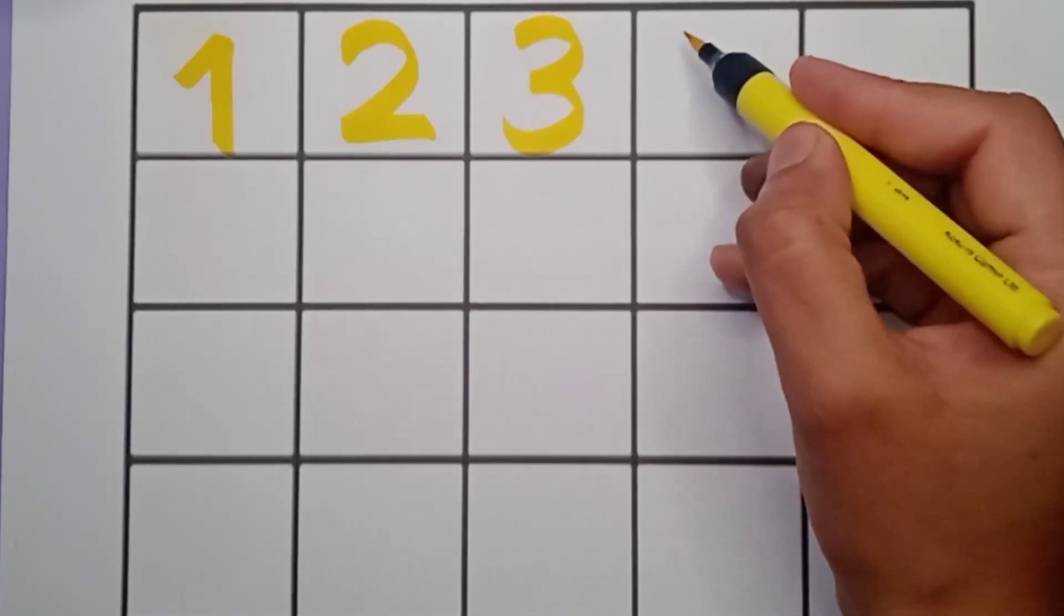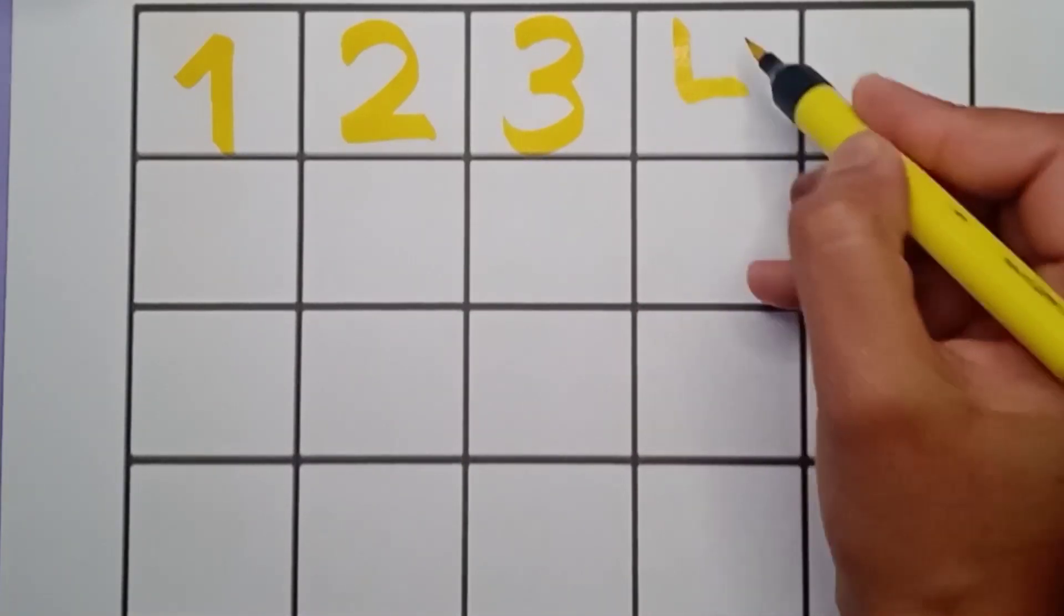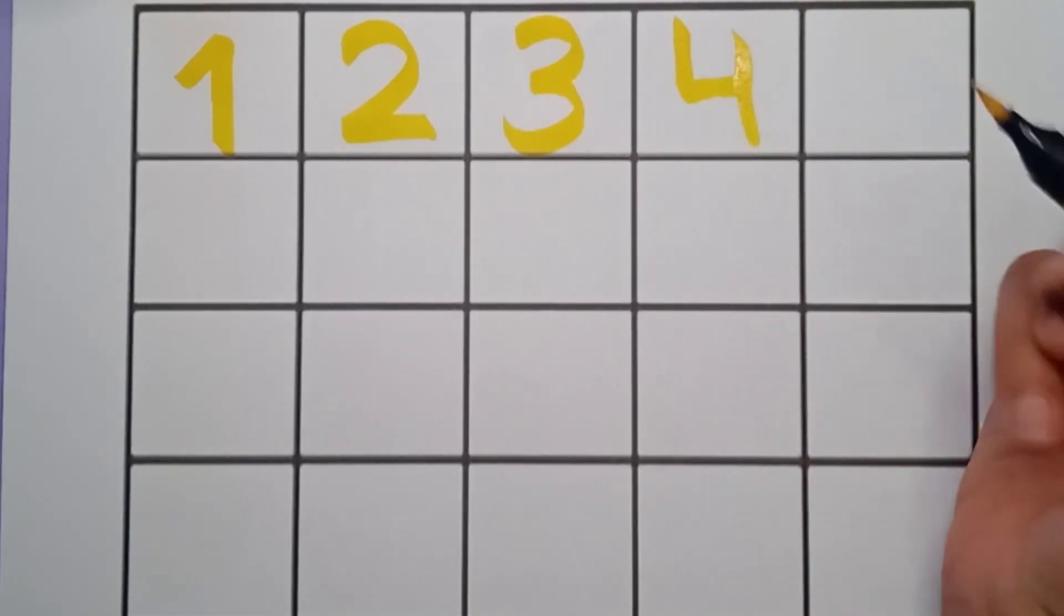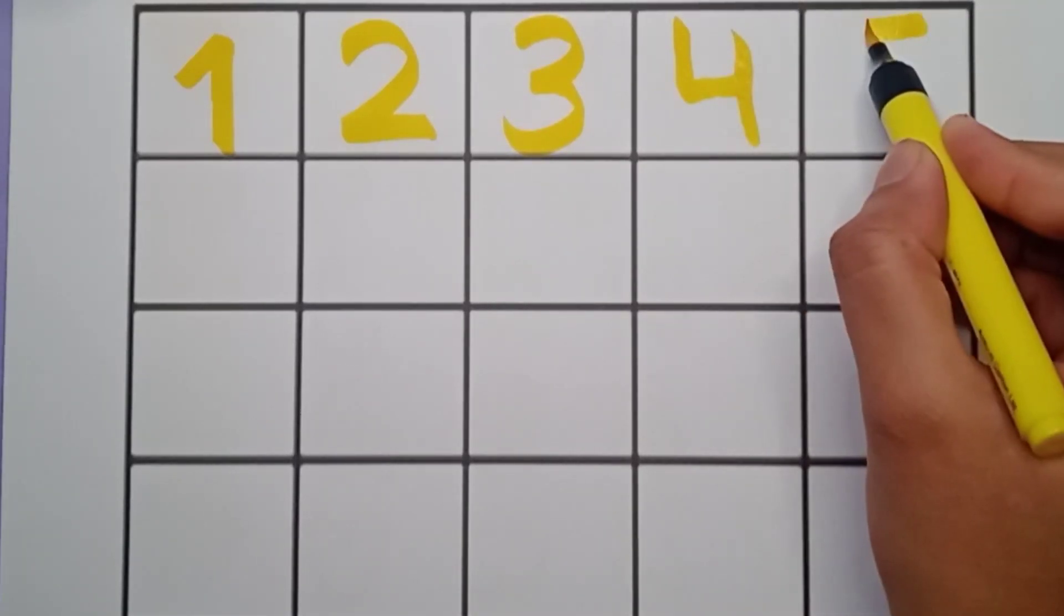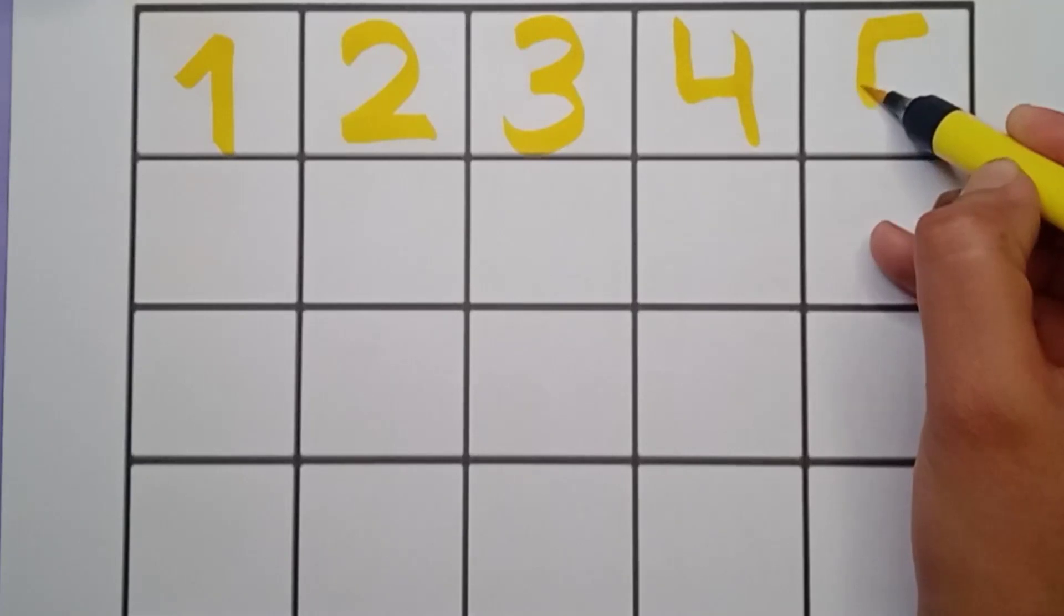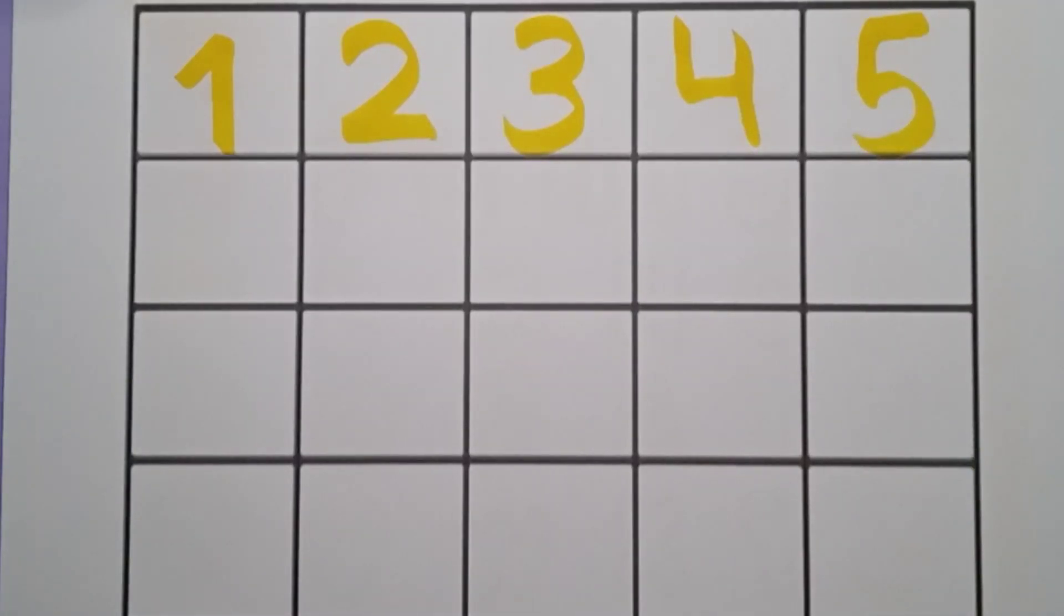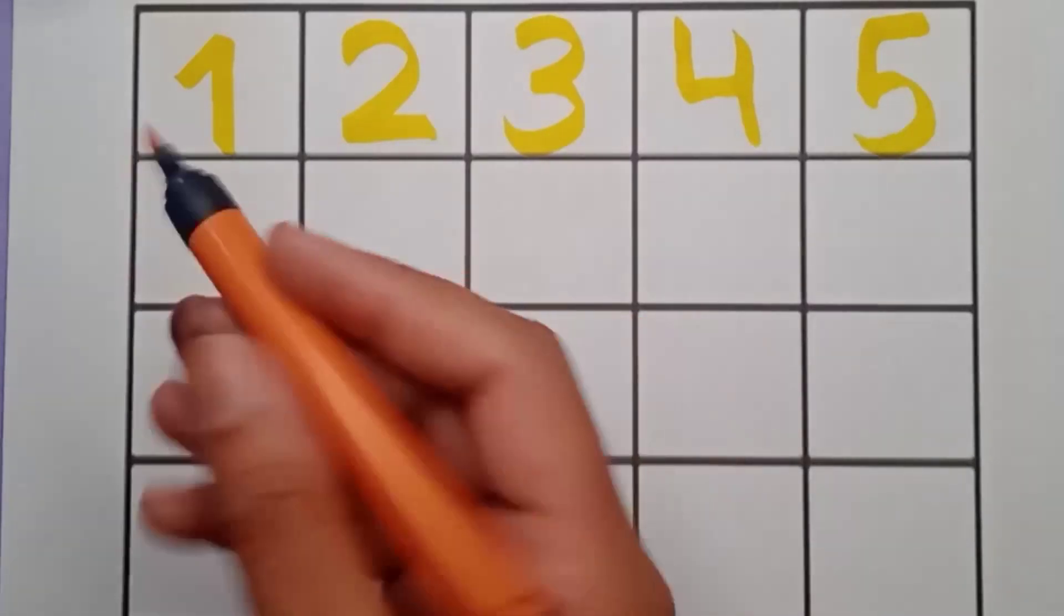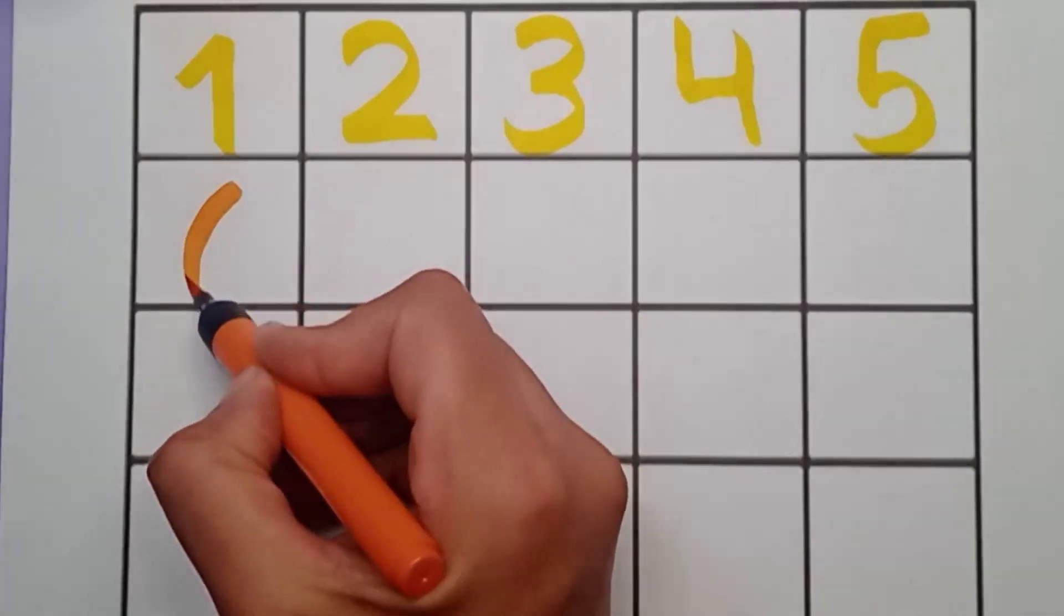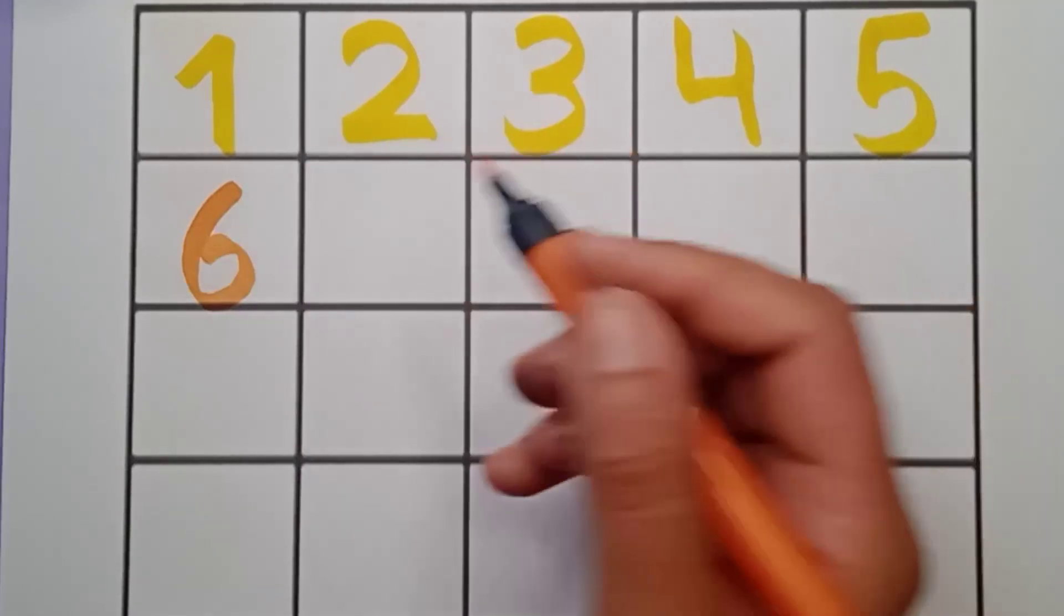Next number is four, like this. Next is five, very good. Next number is six, orange color, six. Which color is it?